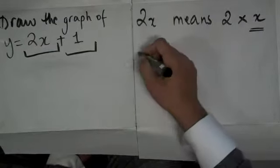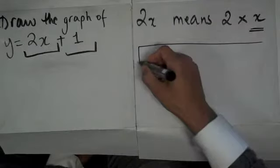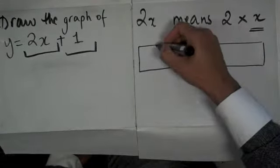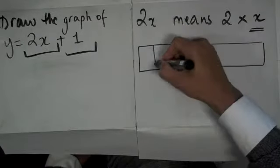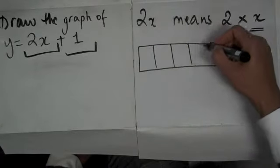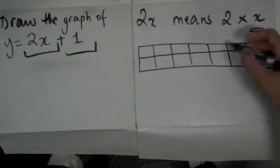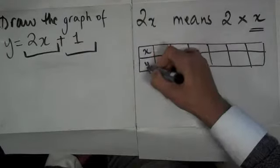So 2x + 1 means 2 times x plus 1, so I can replace the x with any number that I like. What I can do is set up a table and I'm going to write the value of x and get my answer for y.